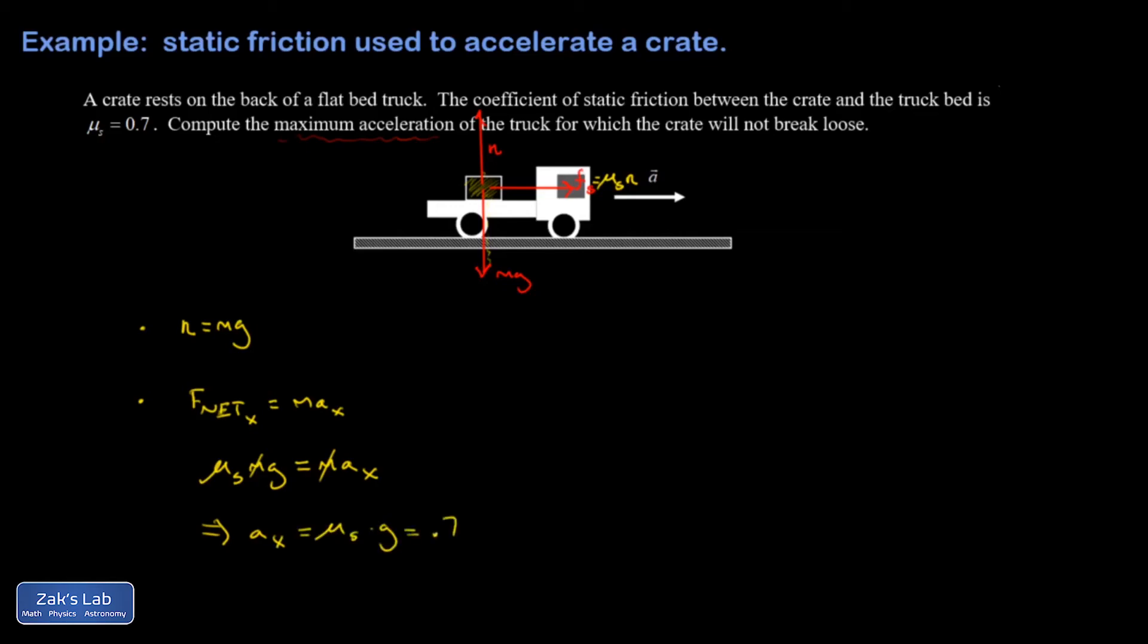So now I can just evaluate this, and I get 0.7, that was the static friction coefficient, times 9.8. I get 6.86 meters per second squared.